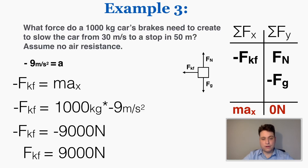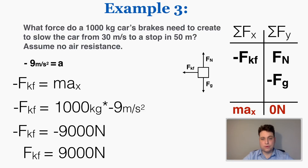I find that the magnitude of the force of kinetic friction equals 9,000 Newtons, pointing to the left. The negative signs cancel — when I put the negative sign next to the symbol itself, the symbols stand for the magnitudes of the force. So this force has a magnitude of 9,000 Newtons pointing left. That is how you use Newton's second law.